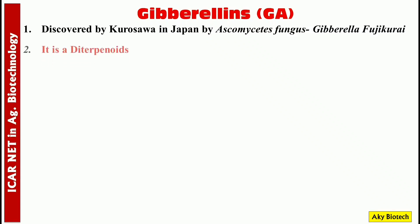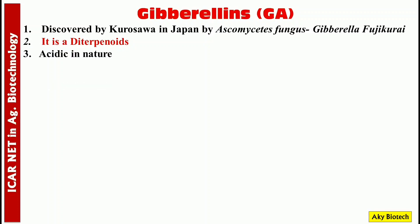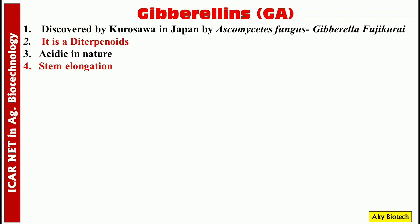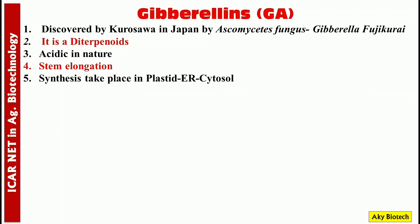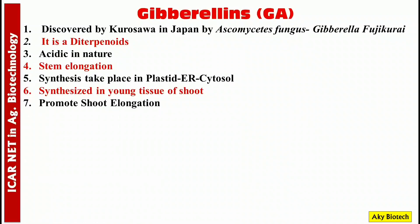Gibberellins was discovered by Kurosawa in Japan from the ascomycetes fungus Gibberella fujikuroi. It is a diterpenoid and is acidic in nature. Number four, it causes stem elongation. Number five, synthesis takes place in the plastid ER and cytosol. Number six, it is synthesized in young tissue of shoot and root.